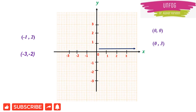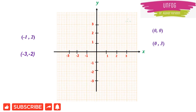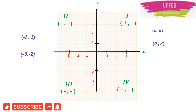The basics you should know: on the right-hand side of the origin you have the positive number line, on the left-hand side the negative number line, on the upper side the positive number line, and on the lower side the negative number line. This means that in the first quadrant both x and y are positive; in the second quadrant x is negative and y is positive; in the third quadrant both x and y are negative; and in the fourth quadrant x is positive and y is negative.